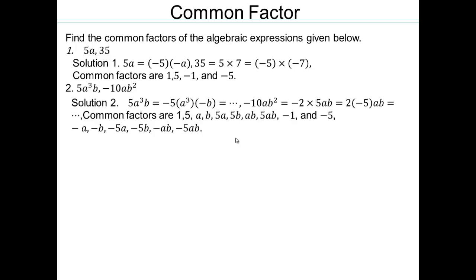Now let's take a look at 5a cubed b and 10ab. 5 is a common factor between 5 and 10. a is common, and b is common. So the common factors are 1, 5, a, b, 5a, 5b, ab, and 5ab. Of course, all the negative versions can be worked in as well.